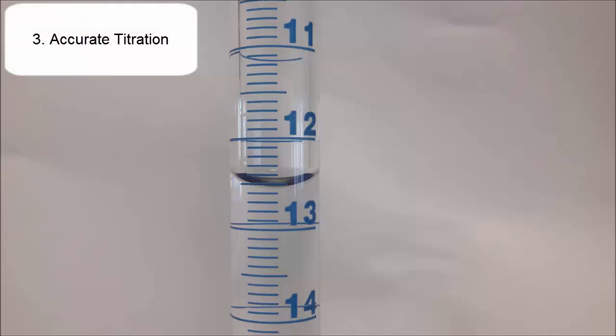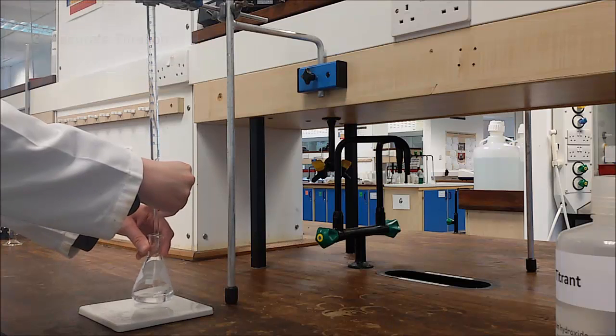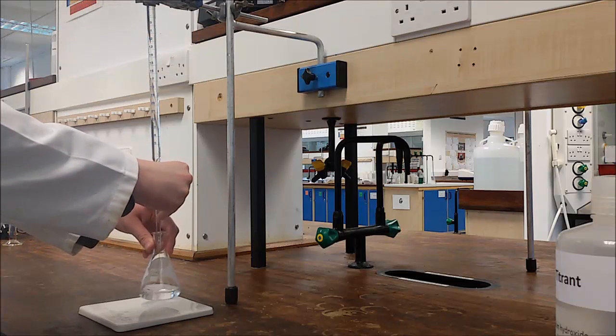For the accurate run, refill the burette to some arbitrary value and run the solution at once, stopping 20-30% before the volume added in the rough run.